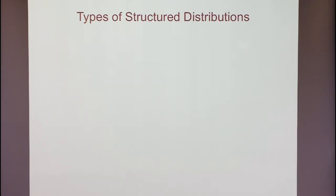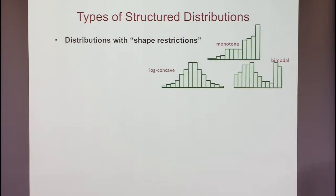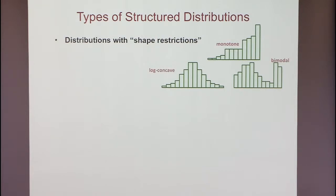Let me give you some types of structural distributions I'd like to learn from samples. One type of structure involves imposing explicit constraints on the shape of the probability density function — I'll focus on one-dimensional data, so PDFs over the real line or a discrete set. This is the first type: explicit shape constraints. A wide variety of restrictions are possible. The second type is semantic constraints: you take simple distributions and combine them in simple ways.